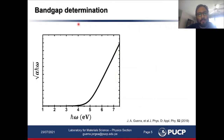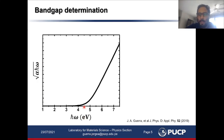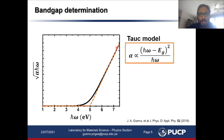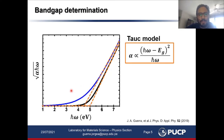The question arises: how do we determine the optical bandgap of an amorphous material? Here, I'm plotting the Tauc plot — the absorption coefficient in the Tauc scale, that is the square root of the absorption coefficient multiplied by the photon energy versus the photon energy. By using the Tauc model, one can determine easily the optical bandgap. However, in amorphous materials, this determination can be biased by the presence of large Urbach tails.